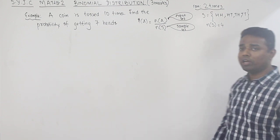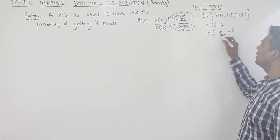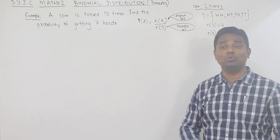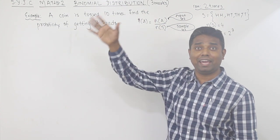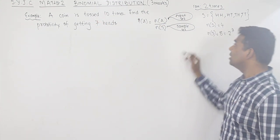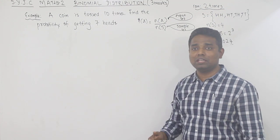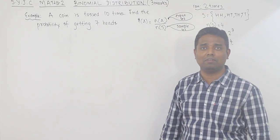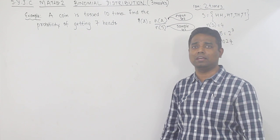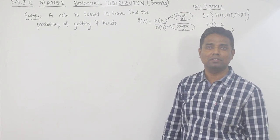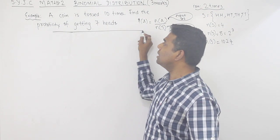If the coin is tossed 3 times, the sample set is 8, that means 2 raised to 3. If 5 times, 2 raised to 5 = 32. If 10 times coin is tossed, N(S) = 2 raised to 10 = 1024. Think of a situation where you have 1024 possibilities to list — it is possible but very difficult. This is why we use the concept of Binomial Distribution.